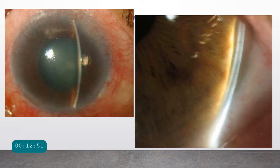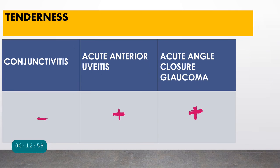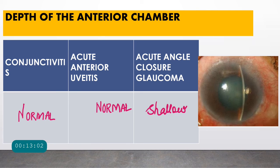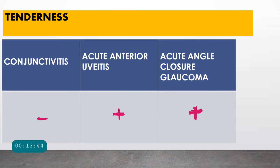The depth of the anterior chamber is important: in conjunctivitis it is normal. In acute angle closure glaucoma, the iris is displaced anteriorly, giving a shallow anterior chamber. On slit lamp using von Herrick's grading, the corneal slit and iris slit are very close — less than one-quarter of corneal thickness — confirming a shallow anterior chamber in acute angle closure glaucoma.